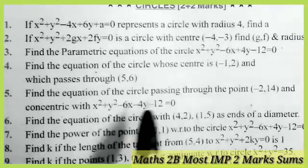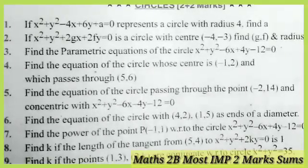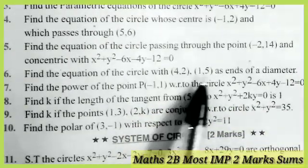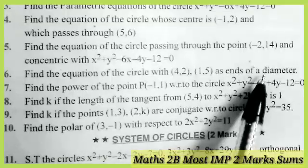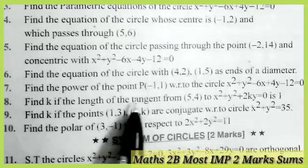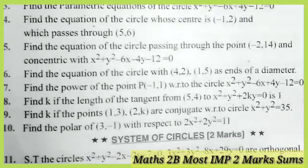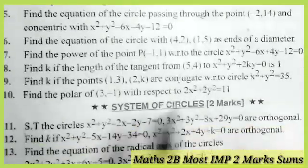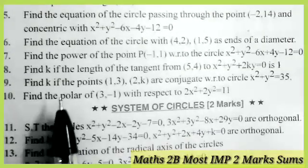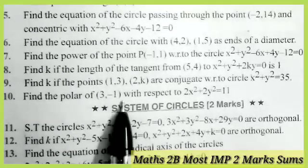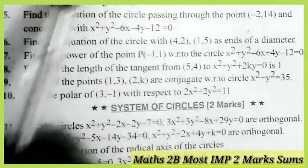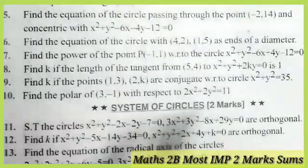Find the equation of the circle concentric with the given circle and passing through the point (−2, 14). Next one: find the equation of the circle with two given points as ends of the diameter. Next one: find the power of the point. Next one: find the length of the tangent. Find K value if the length of the tangent equals 1. If the given points are conjugate points, find the K value. Find the power of (3, −1) with respect to the circle. These are the most frequently repeating model questions from the topic circles.